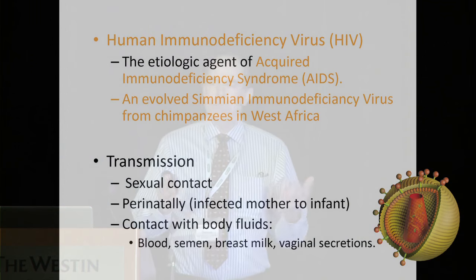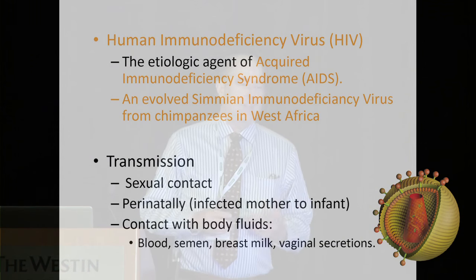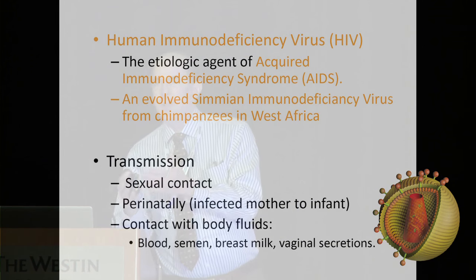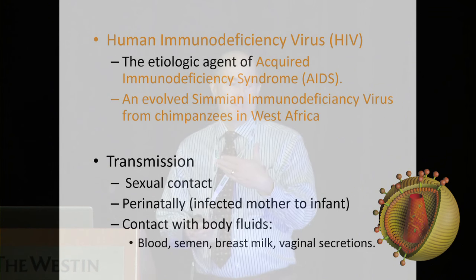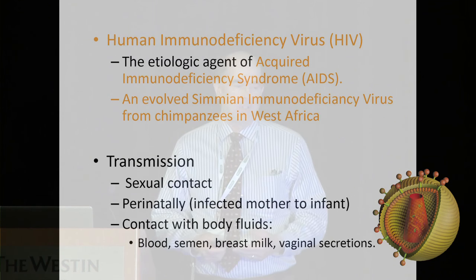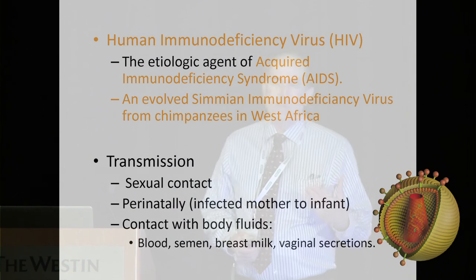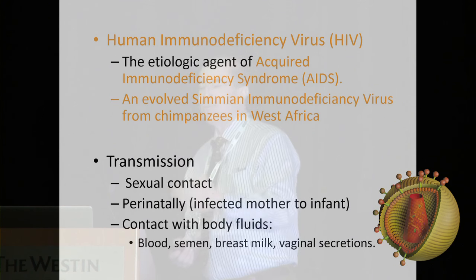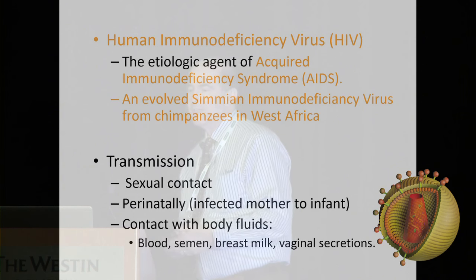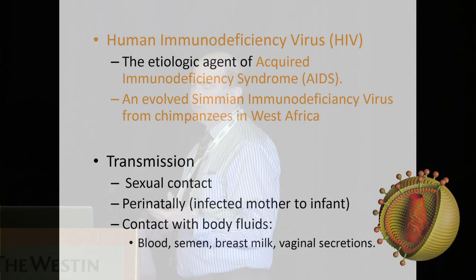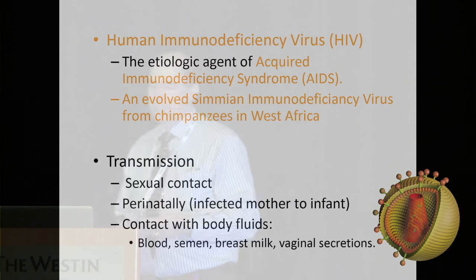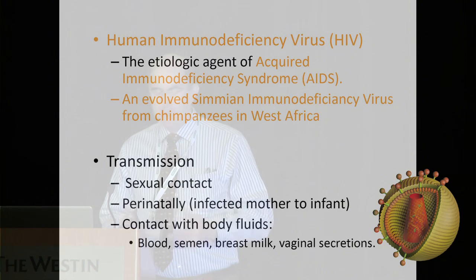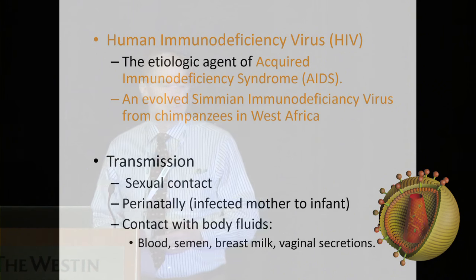HIV, as we all know, is the etiologic agent of AIDS, but AIDS is just one stage of HIV infection. The virus is believed to have evolved from a simian immunodeficiency virus from chimpanzees, transmitted by sexual contact and body fluid transmission.